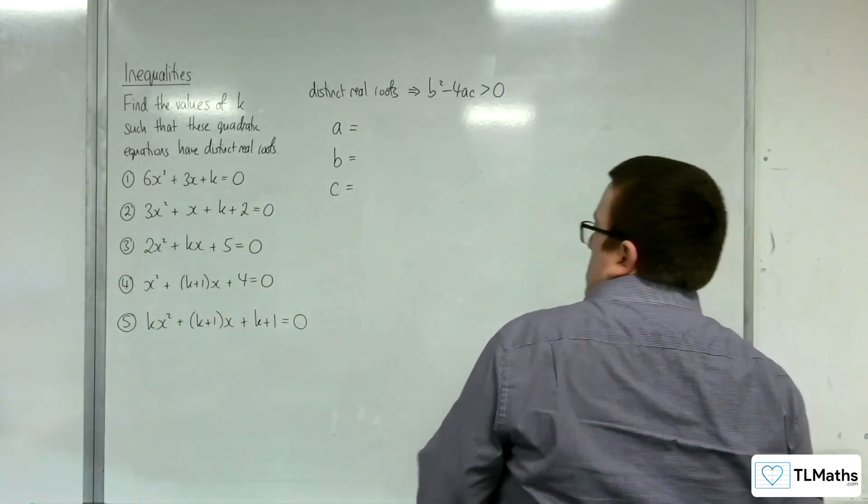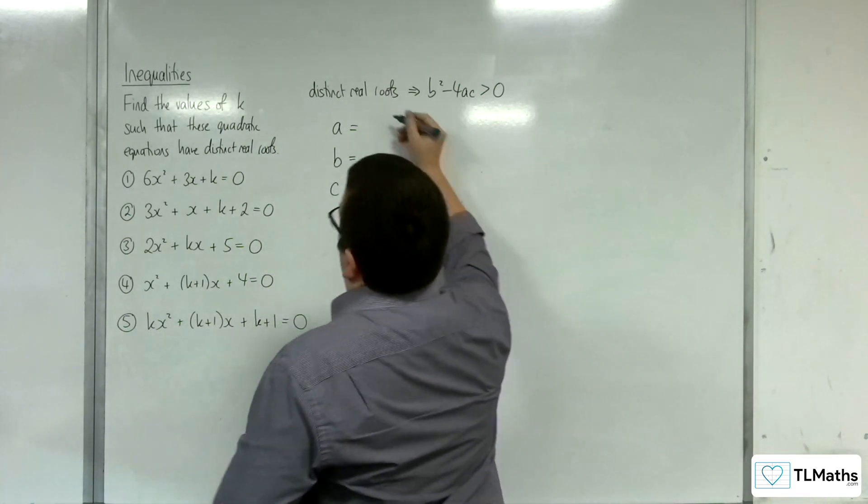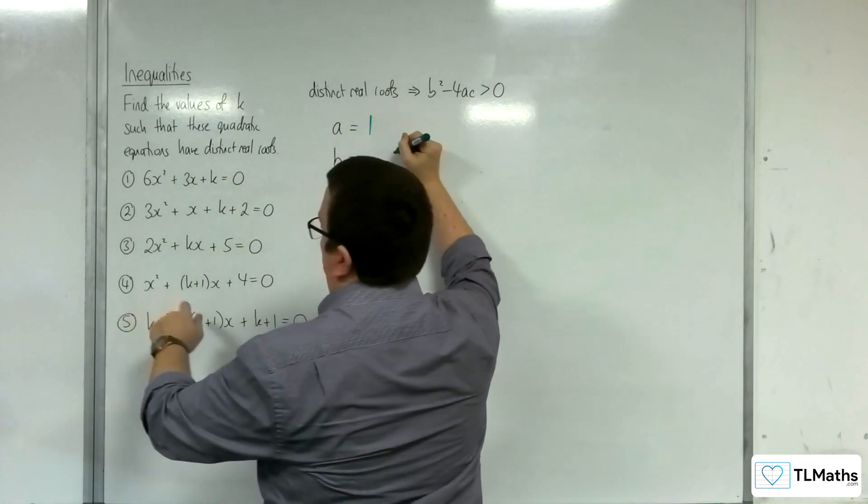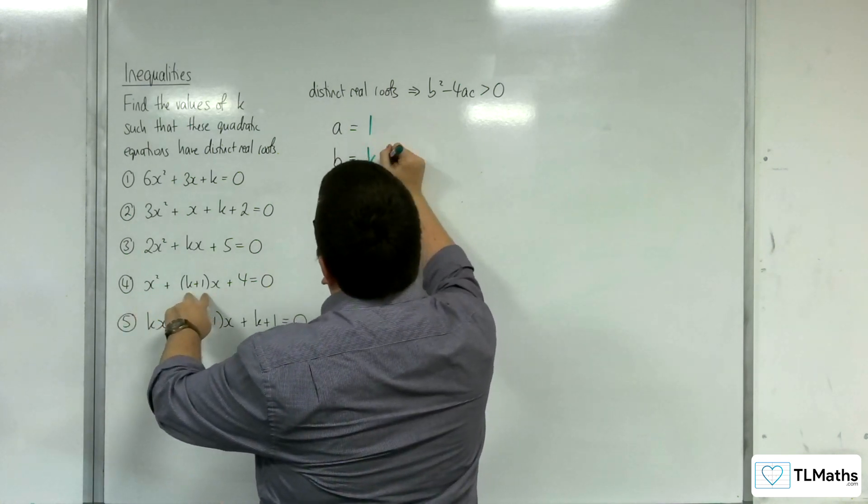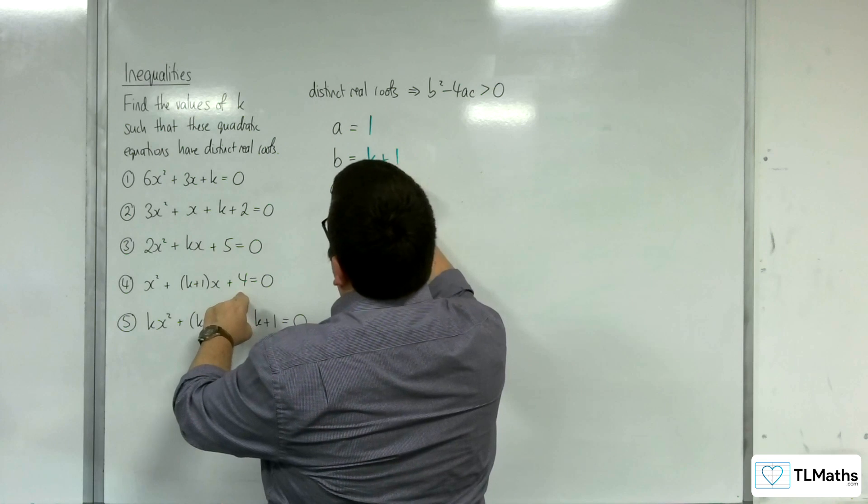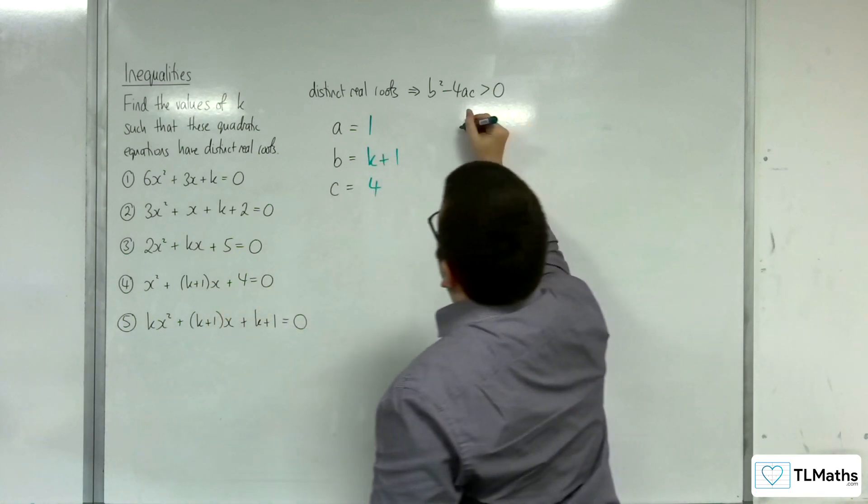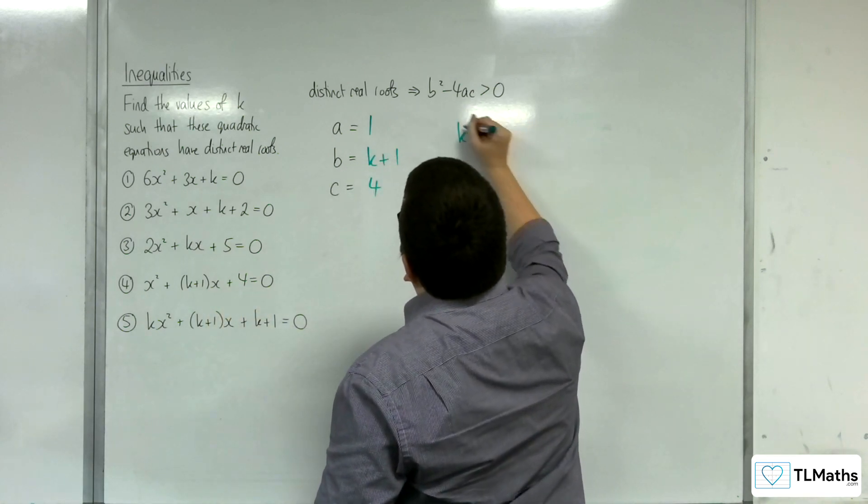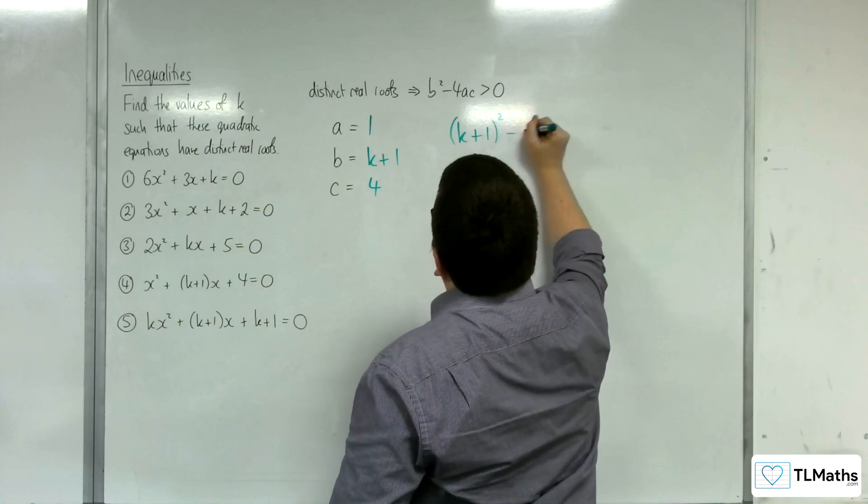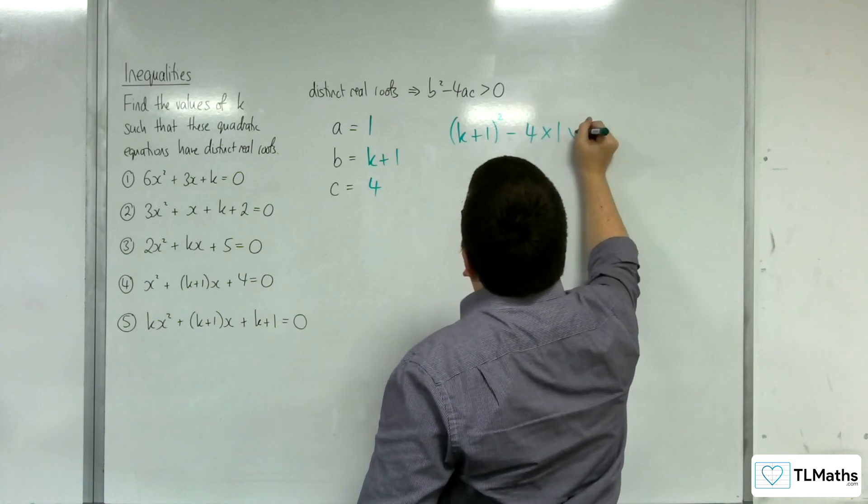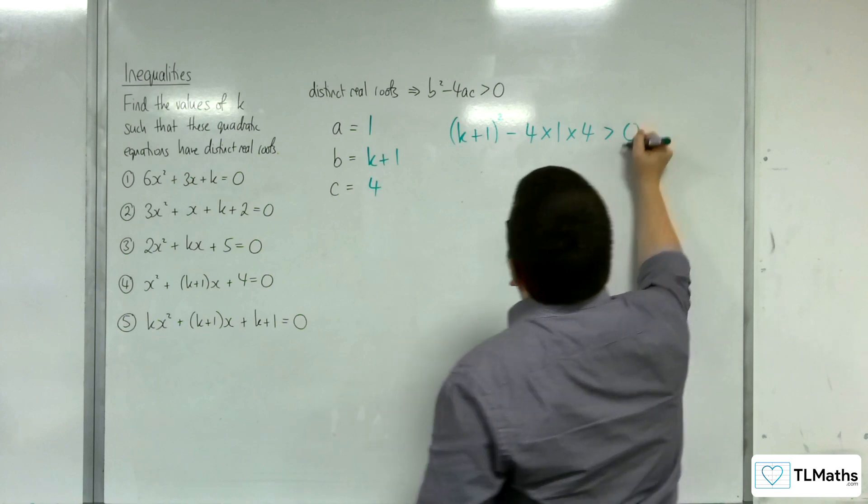That was number 3. So, number 4, the coefficient of x squared is 1, the coefficient of x is k plus 1, and whatever's left over is 4. We have k plus 1 squared, substituting in, take away 4 lots of 1 times 4, which is greater than 0.